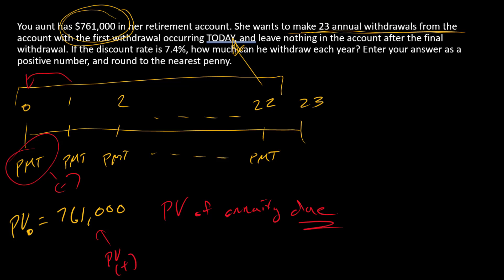We have a number of payments, so N is going to be 23, and we have an interest rate of 7.4%. So I is equal to 7.4.